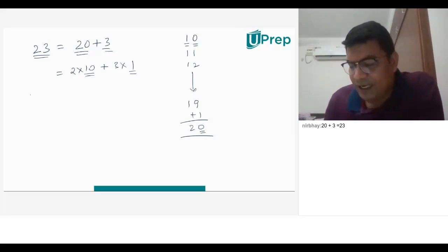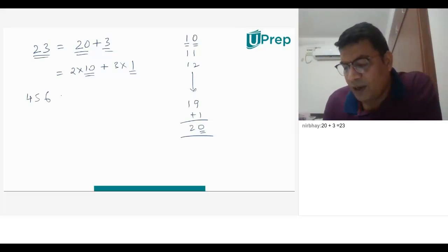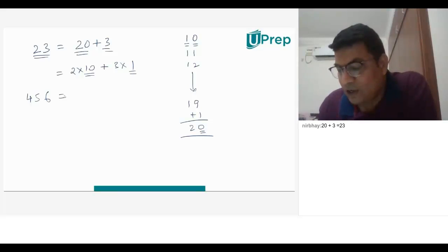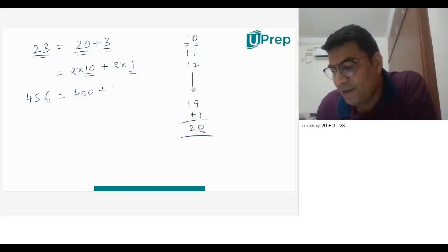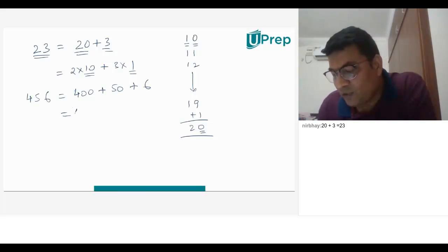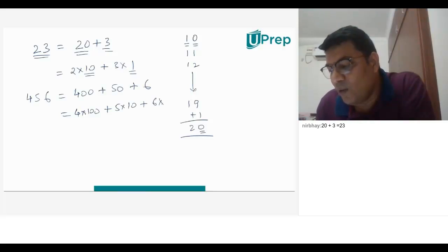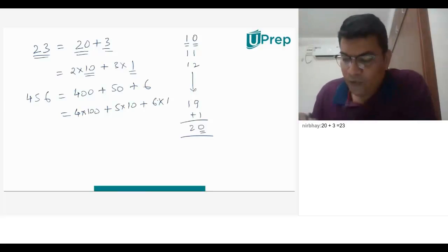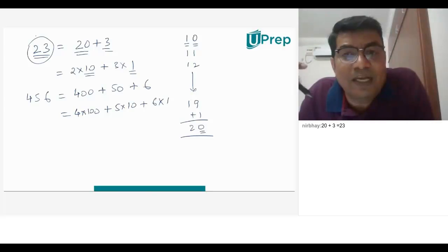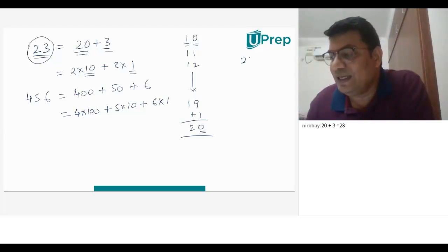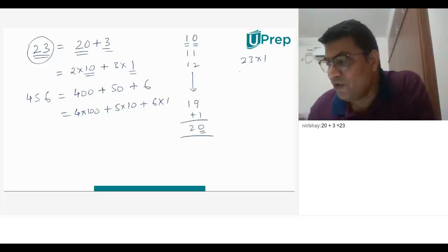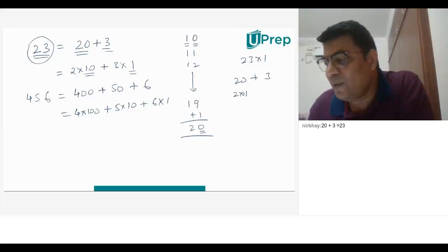When we have a 3-digit number like 456 — what do you mean by 456? The meaning of 456 is 400 plus 50 plus 6. If you observe, this is nothing but 4 times of 100 plus 5 times of 10 plus 6 times of 1. Going back to understand 23, I can say 23 is 23 times of 1, but we don't say that. Another way is we say 20 plus 3, and write it as 2 into 10 plus 3 into 1.